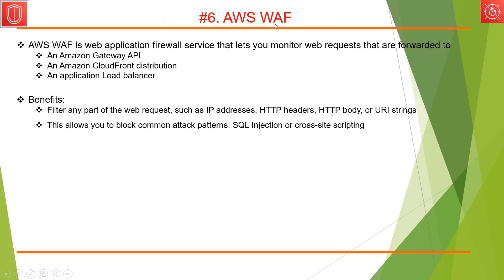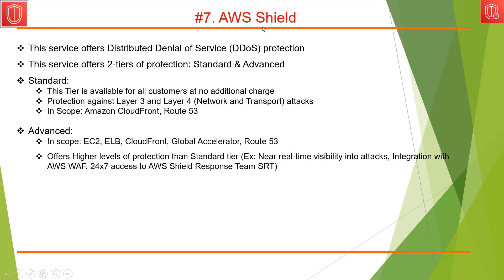The next service is WAF — a web application firewall service that lets you monitor web requests forwarded to Amazon API Gateway, CloudFront distributions, or an Application Load Balancer. This service helps filter any part of the web request such as IP addresses, HTTP headers, HTTP body, or URI strings. It allows you to block common attack patterns such as SQL injection or cross-site scripting.